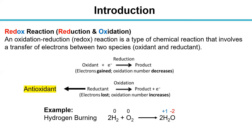Antioxidants can react with reductants, so oxidation is stopped or slowed down. Here is an example: hydrogen burning. Hydrogen is neutral and its oxidation number is zero. During burning, one hydrogen atom loses one electron and its oxidation number increases to one. This is the oxidation process of hydrogen.